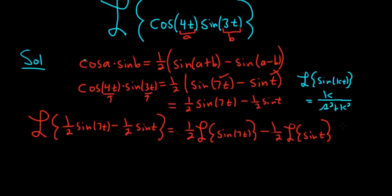So in the first case, we have one-half times—k is 7—so 7 over s squared plus 7 squared. 7 squared is 49.